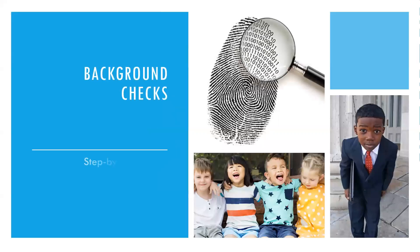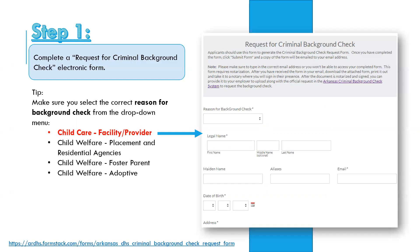Now let's go through the step-by-step process of submitting background checks. We have some screenshots to share. Your first step is to complete the request for criminal background check — a consent form containing all the applicant's information. The very first box says 'reason for background check.' Make sure you select the correct reason: child care, CHI, child care facility provider. There are other options such as child welfare that some of you may also have.